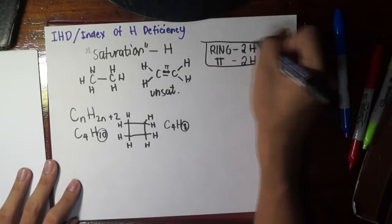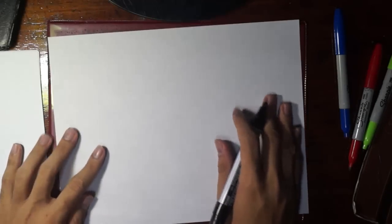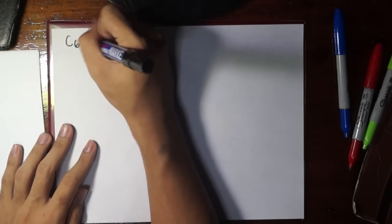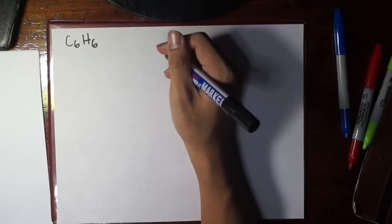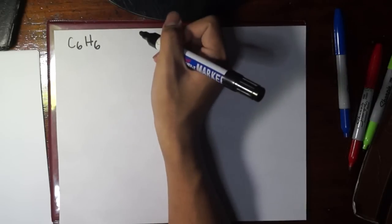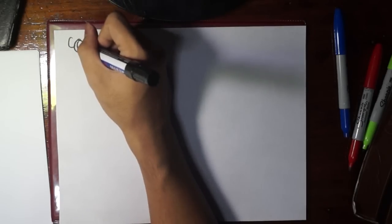Now let's have an example of IHD. For example, we are given the molecular formula C6H6. The first thing we have to do is to know the molecular formula. In this case it's already given.